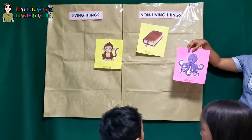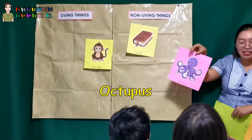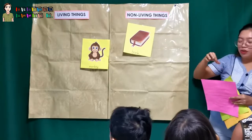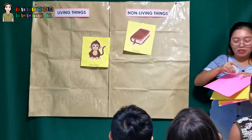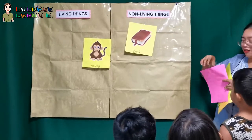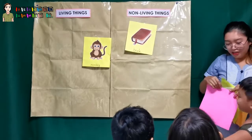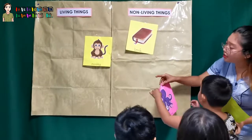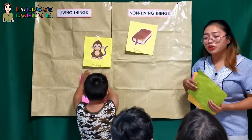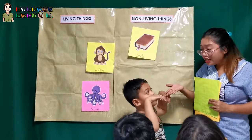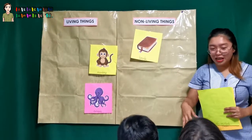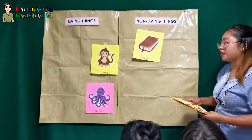How about this? What is this, Jeph? Octopus! Okay, so can you put the octopus if this is a living thing or non-living thing? Very good. Where can you find an octopus? In the ocean. Okay, in the beach. It's a beach, yes. In the ocean — in the deep blue sea or in the ocean, you can also find octopus.